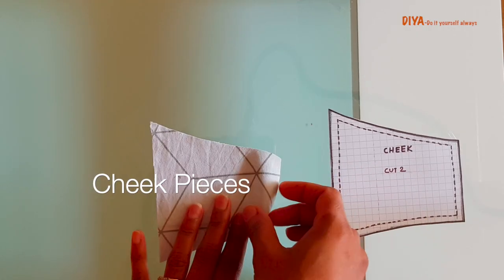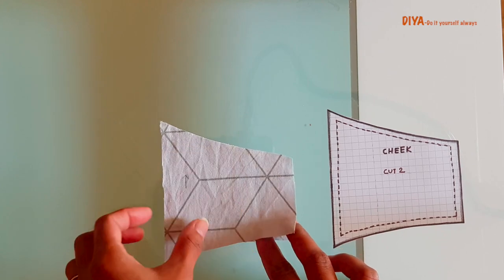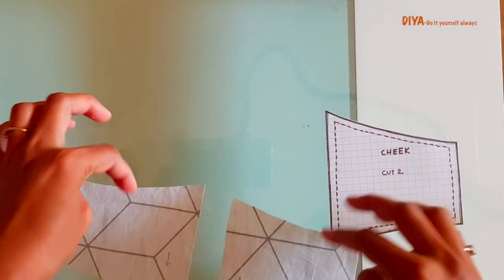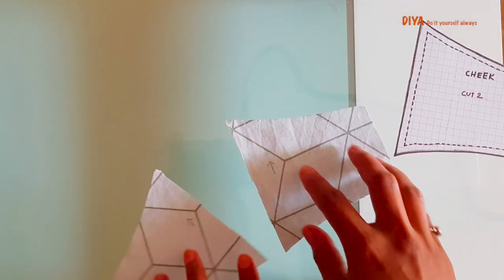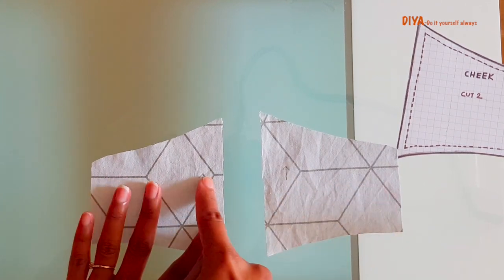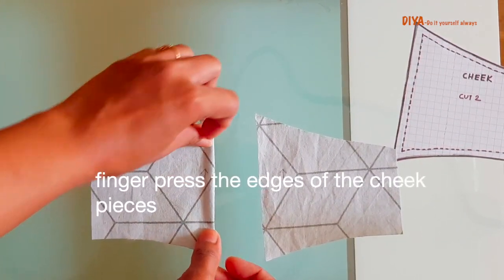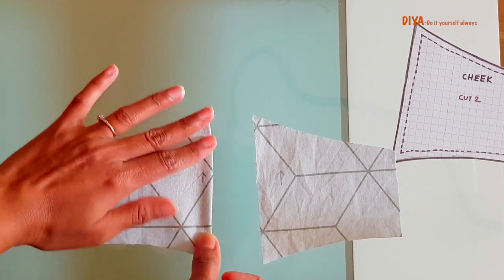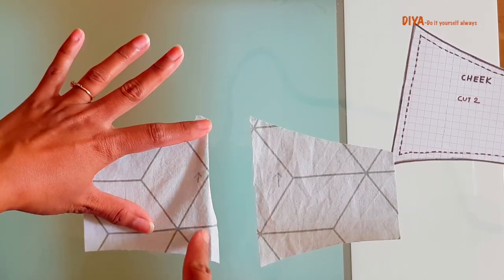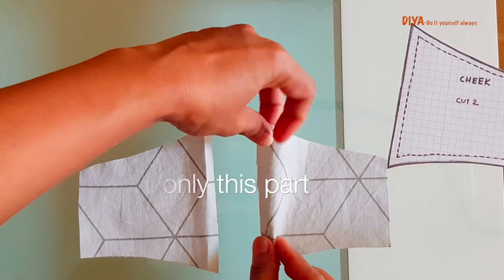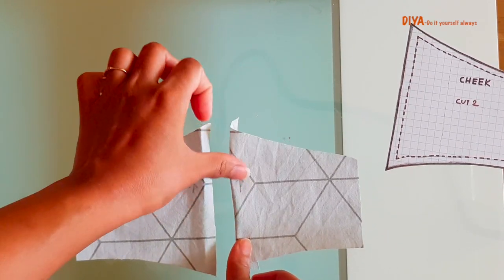Now we'll come to the cheek pieces. As you see, I am going to finger press again the edges of these cheek pieces. This is how you need to press, finger press, and then sew this part. With the right side piece also you have to do the same thing.